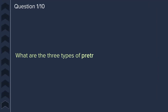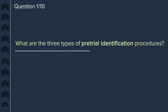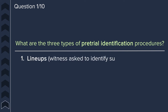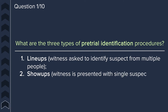Question one: what are the three types of pretrial identification procedures? One, lineups, where a witness is asked to identify a suspect from multiple people. Two, show-ups, where a witness is presented with a single suspect. And lastly, photo arrays.